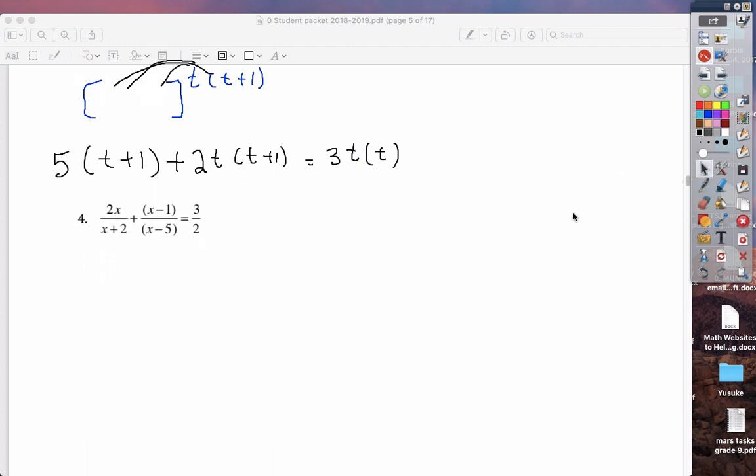Last one for today. Number 4, we have a common denominator of 2, x plus 2, and x minus 5. It's always easier to see the clearing when you're multiplying through if you keep your common denominator in factored form. It's very tempting from grade 7 and 8 to start expanding, but it actually doesn't help when our goal is to clear fractions.